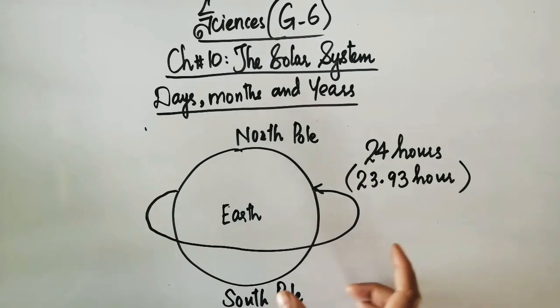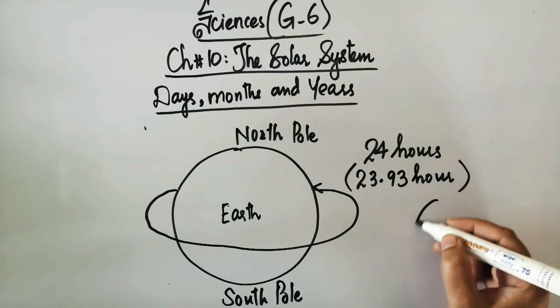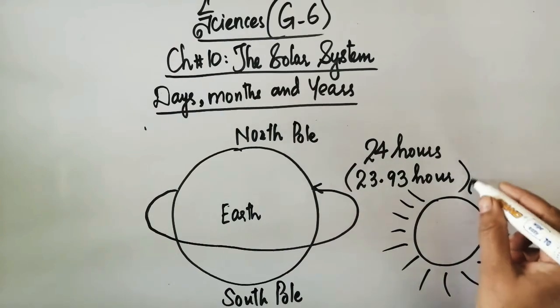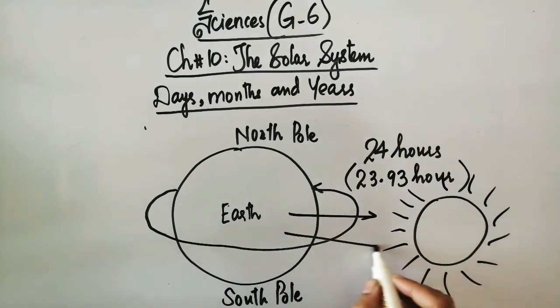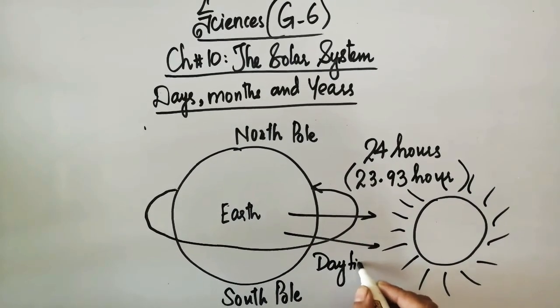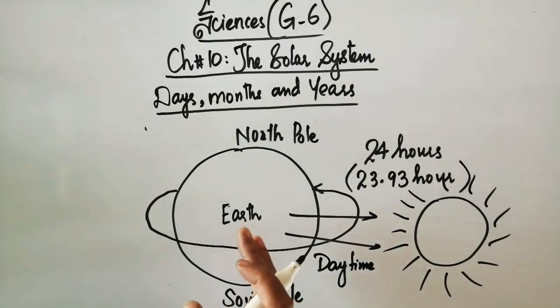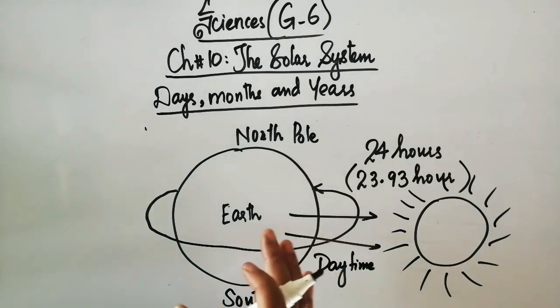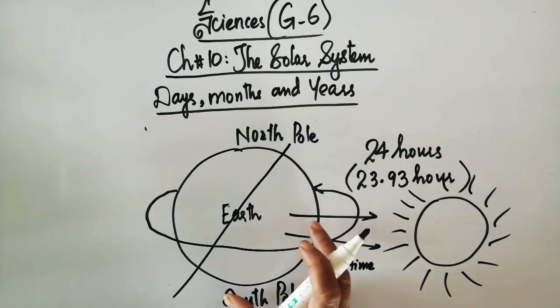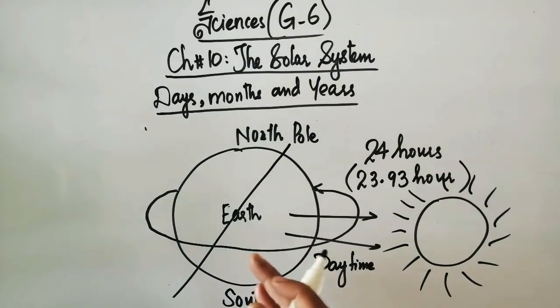When the part of the Earth on which you live is facing the sun, it is daylight. For example, the surface, the direction of the sun which is facing it - there will be day time. But the face of the Earth which is away from the sun, which is far from the sun - there the day is not there. Why? Because the sunlight cannot reach there.